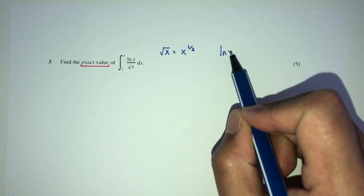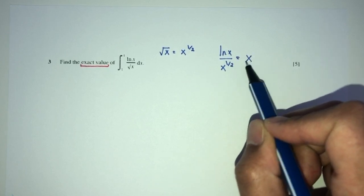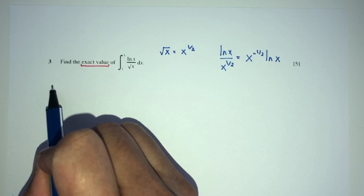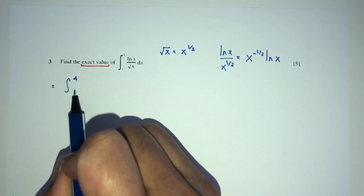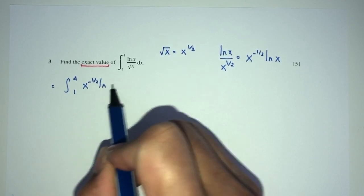Now, what is ln of x over x power half? We can write this as x power minus half and ln of x. So, this will be integration of 4, 1, which is the limits. And here we have x power minus half and ln of x.